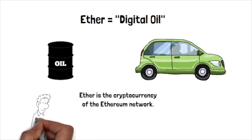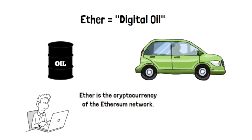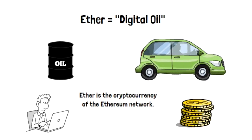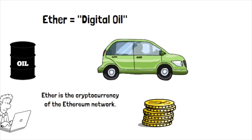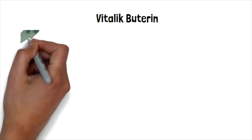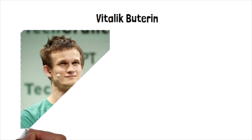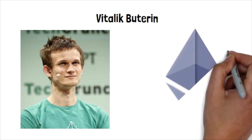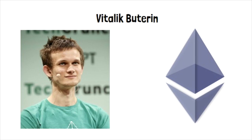Just as you would need oil to run a machine, Ether is needed to keep the network functioning — that is, to pay for all the computing costs. That is why programmers must pay a fee in Ether to publish their dApps on the Ethereum network. Ethereum was first proposed by Vitalik Buterin in 2013 and went live in 2015. Ether's ICO took place in 2014 at around 40 cents.